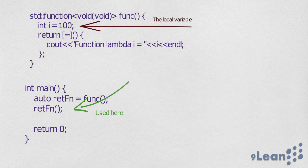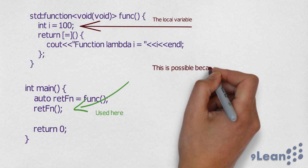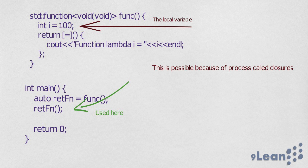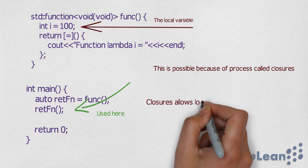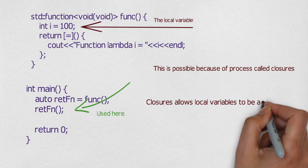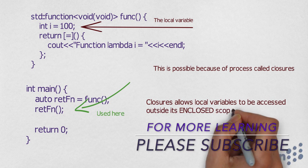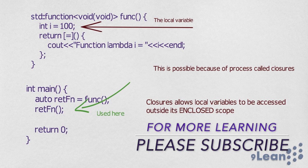This is what closure does. This happens because of closures. So we can define closure as something like this: Closures allow local variables to be accessed outside their enclosed scope. So here we are declaring a variable inside.